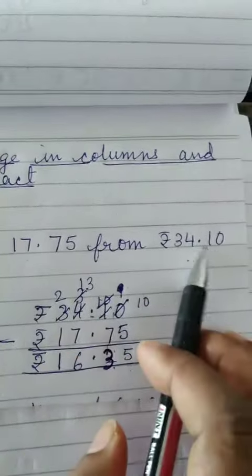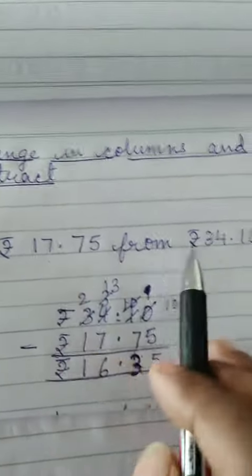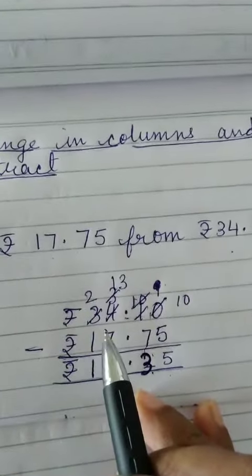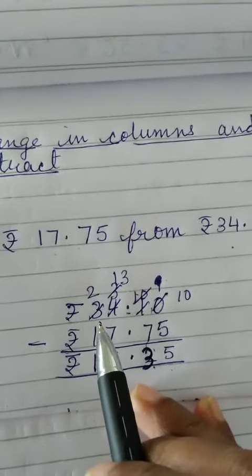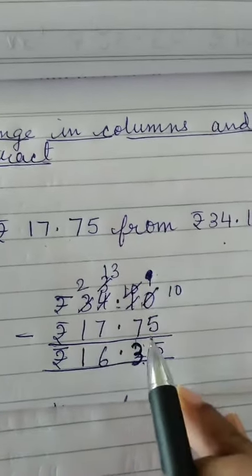Now here the question is given. We have to subtract this amount from this amount. So here subtraction is given: 34.10 minus 17.75.